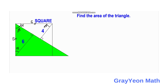These two triangles are congruent because of the Angle-Side-Angle congruence theorem. Knowing that these two triangles are congruent, this side is actually four units, because it corresponds to the side of four, and this other side is actually six units, since they are congruent.